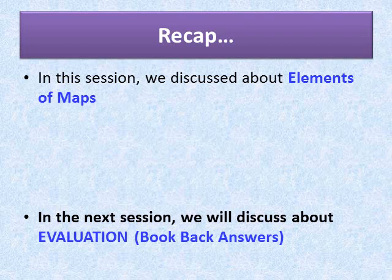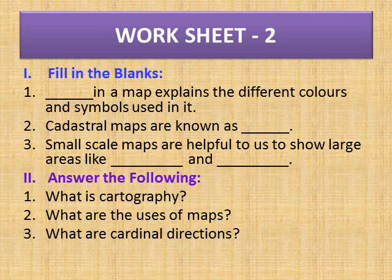In the next session, we will discuss the evaluation part — the book back answers. Now, it's time for Worksheet Number 2. Roman numeral I — Fill in the blanks: (1) Dash in a map explains the different colors and symbols used in it. (2) Cadastral maps are known as dash. (3) Small scale maps are helpful to show large areas like dash and dash. Roman numeral II — Answer the following: (1) What is cartography? (2) What are the uses of maps? (3) What are cardinal directions?